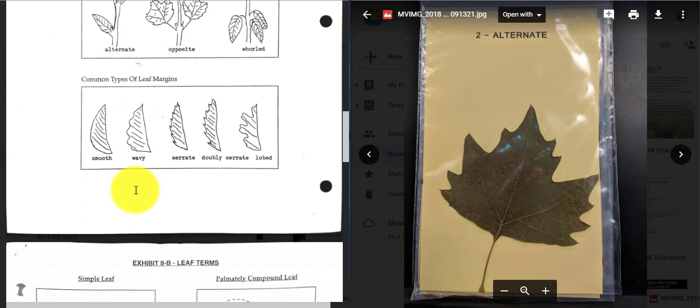Leaf margins are the edges of the leaves, kind of like how margins are the edges of the paper that you might write on or read on. So smooth means it's just kind of like a smooth edge here. There's no bumps, curves, sharp points, or anything. Wavy is kind of wavy. Not a lot of deep cuts going towards what's called the midrib, but it's not smooth either. It looks kind of bumpy, so that's the wavy one.